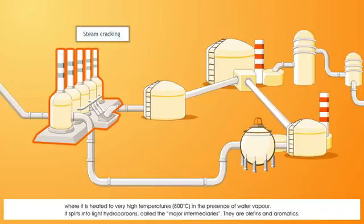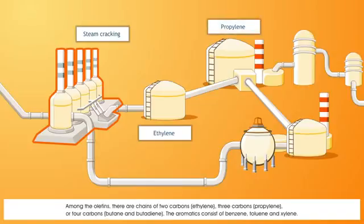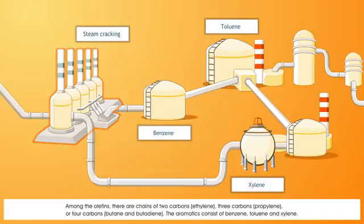It splits into light hydrocarbons, called the major intermediaries. They are olefins and aromatics. Among the olefins, there are chains of two carbons (ethylene), three carbons (propylene), or four carbons (butane and butadiene). The aromatics consist of benzene, toluene and xylene.